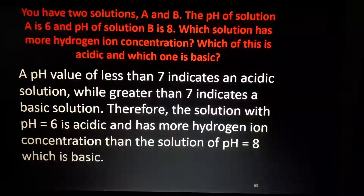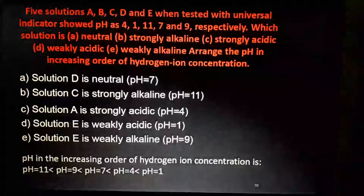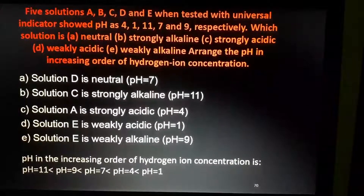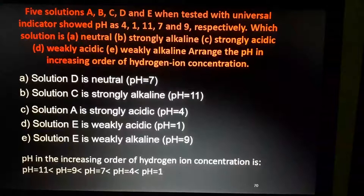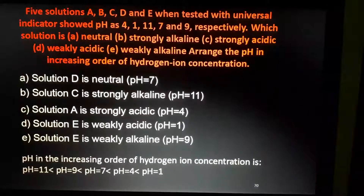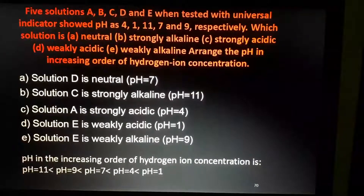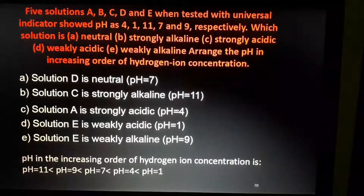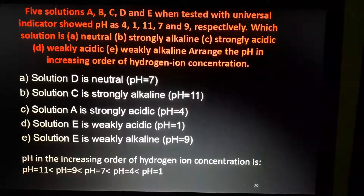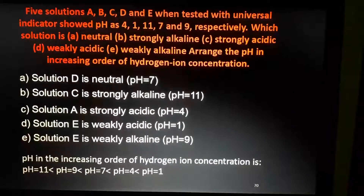Questions will come like: pH value is 6, pH value is 2, pH value is 13, pH value is 11, pH value is 8 — arrange them in ascending order, or identify which is a base. Below 7 is acidic in nature, above 7 is basic in nature. If the pH value is below 3, we can say it is a strong acid; if the pH value is above 12, it is a strong base. If the pH value is between 8 to 11, it is weak alkali or weak base; between 4 to 6, it is a weak acid.